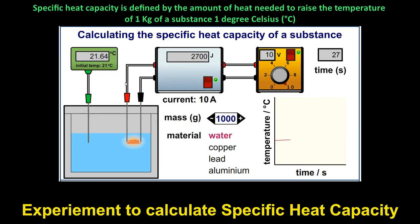It's about to reach 22 degrees Celsius and the amount of energy shown on the joule meter will give us the specific heat capacity of water. It has finally reached 22°C, and you can see it reads 4200. So the specific heat capacity of water is 4200 joules per kilogram per degree Celsius.